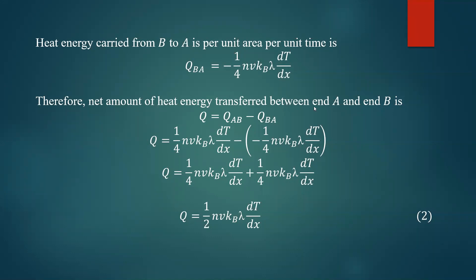The net amount of heat energy transferred from end A to end B in one second is Q = Q_AB minus Q_BA. Substituting, minus of minus gives a positive term, so Q equals (1/4 + 1/4) N V K_B lambda dT/dx, which gives Q = (1/2) N V K_B lambda times dT/dx. This equation represents the amount of heat carried by electrons from end A to end B per unit area per unit time.